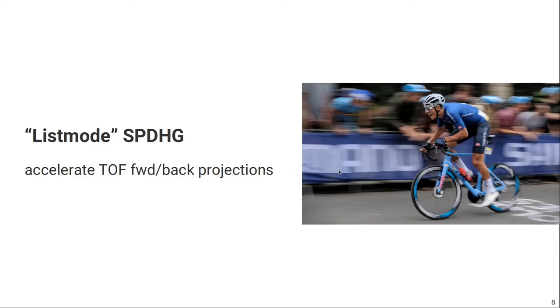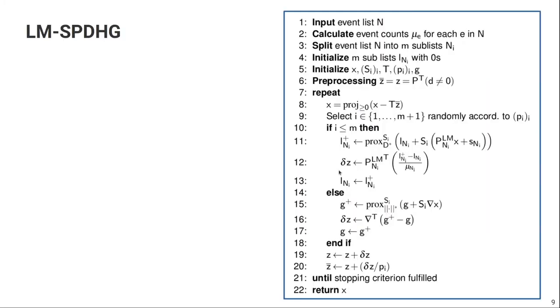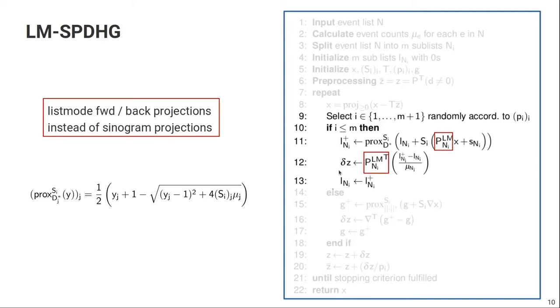The second aim of our work was to speed up SPDHG even more. And that is possible by processing the time-of-flight emission data in list mode. So in our proposed list-mode SPDHG algorithm, when we look at the data updates, we can see indeed that instead of doing sinogram forward projections and back projections, we introduce list-mode forward and back projections. And they are, for sparse data, usually faster.